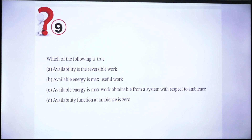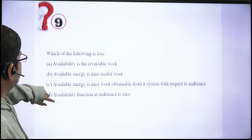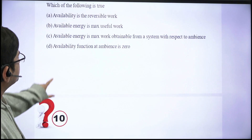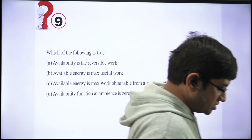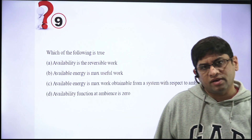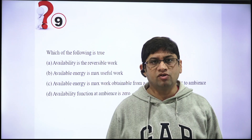Question 9: Which of the following is true? Options include: availability is reversible work; available energy is maximum useful work; available energy is maximum work obtainable from the system with respect to ambience; availability function at ambience is zero. This question distinguishes between available energy and availability function — availability and available energy are the same, but availability function is a state point function calculated at one state.